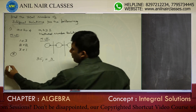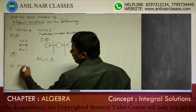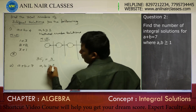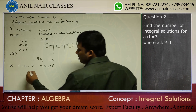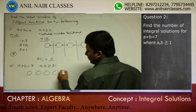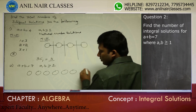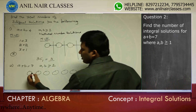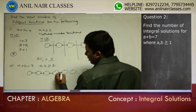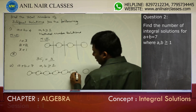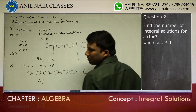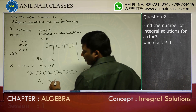One more example: A plus B is equal to 7, where A and B are greater than or equal to 1. That means there are 7 bars. How many spaces are there? 6 spaces are there in between. Out of these 6 spaces, select any one space. 6C1 is 6.